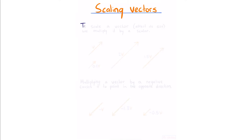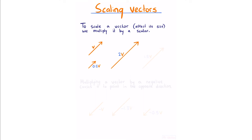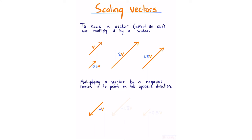Scaling vectors. To scale a vector — meaning to affect its size — we multiply it by a scalar. So if we have vector v, we can multiply it by a half to get half that length, multiply by two to get double that length, and multiply by 1.5 to get one and a half times that length. Multiplying a vector by a negative causes it to point in the opposite direction, and we can scale it at the same time.